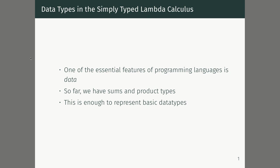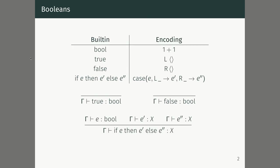So far in our language we have a little bit of data. We have sums and product types — disjoint unions and Cartesian products. This is just enough to represent some basic data types. For instance, if we want to represent the Boolean type, the most fundamental piece of data in a computer, we can represent it in the simply typed lambda calculus with the type 1 plus 1.